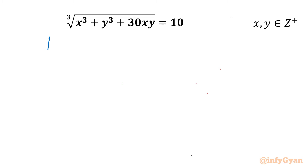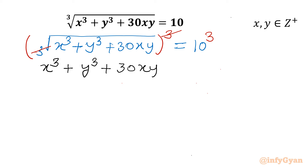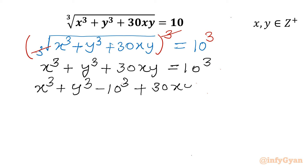Let's get started by writing our equation: cube root of (x³ + y³ + 30xy) = 10. Now I will consider cubing both sides. I can cancel the cube with the cube root, so I can write our LHS as x³ + y³ + 30xy = 10³. Taking all terms to the LHS: x³ + y³ - 10³ + 30xy = 0.